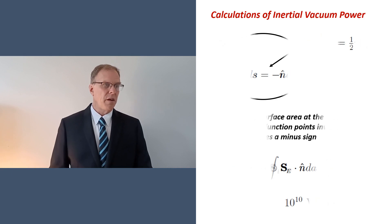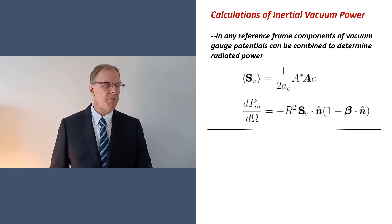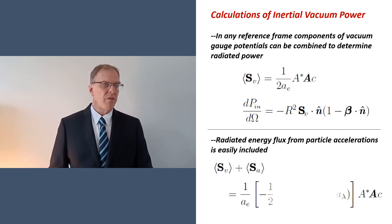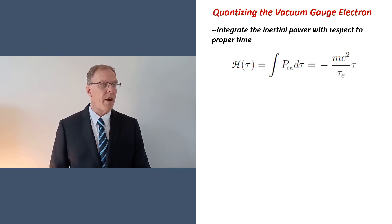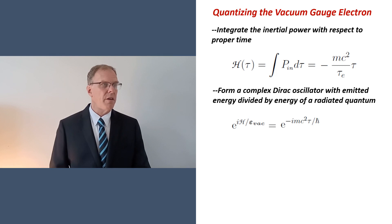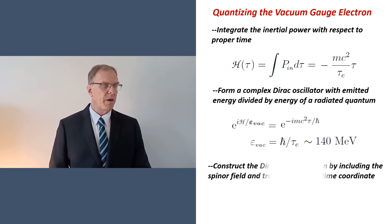Regardless, vacuum power can also be determined by combining the time and space components of the vacuum gauge potentials. This is important because it leads to a natural formula for radiated flux during particle accelerations. To finish this video, let's quantize the classical particle by integrating the inertial power to a finite proper time tau. Now form a complex oscillator whose argument is the integrated power divided by the energy of a radiated quantum. This is a Dirac oscillator if the energy of the radiated quantum is about 140 MeV. The fold-the-rack wave function follows by inserting the spinor field and transforming the time coordinate.